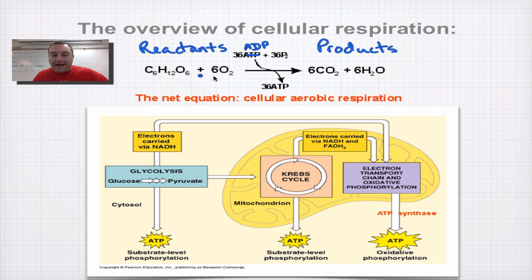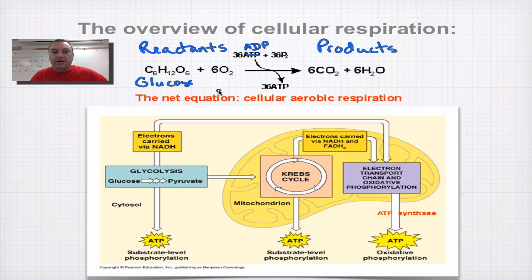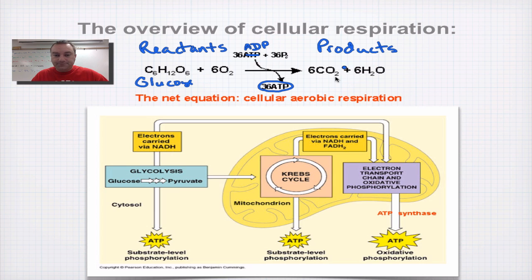The reactants of cellular respiration were the products of photosynthesis. So C6H12O6 — glucose — and oxygen are the reactants. The oxygen we breathe in is used here to make ATP. The ADP and ATP are not considered products or reactants because they are constantly being recycled by your body. The two waste products are carbon dioxide, which we breathe out, and water — which is part of the reason we have to use the bathroom occasionally.